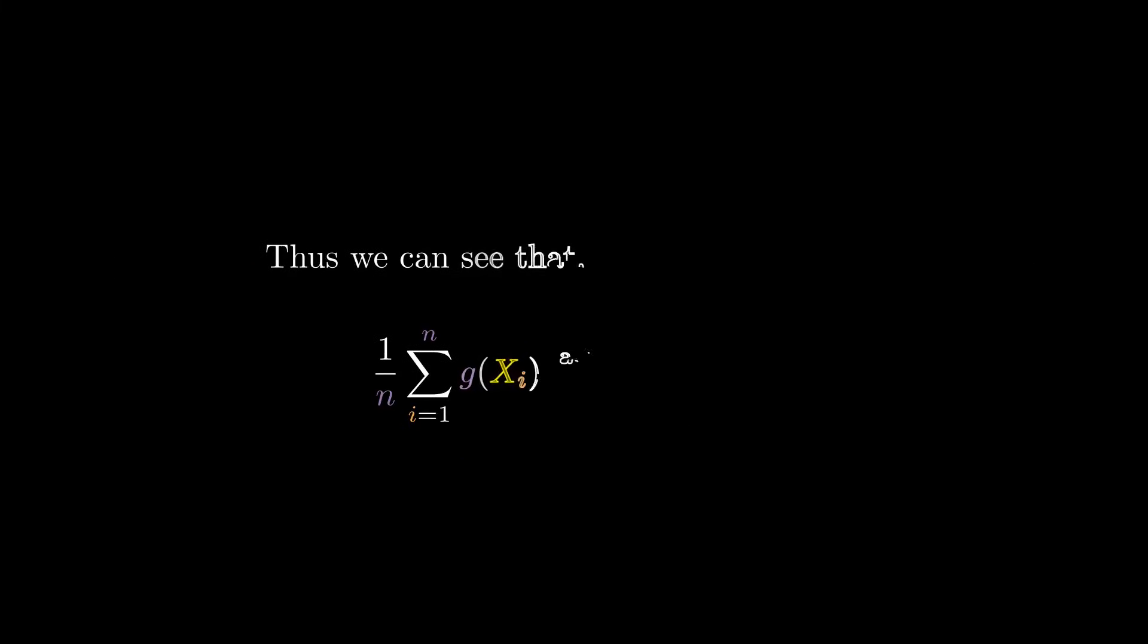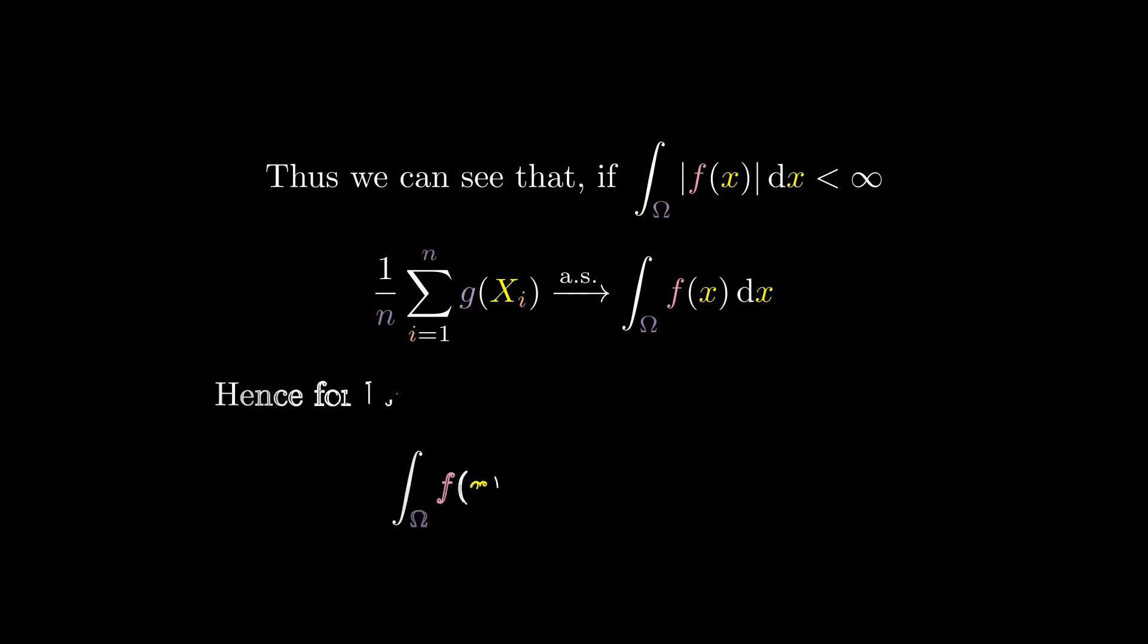If the integral converges absolutely, and we take N observations of G of X, each one independent and identically distributed, the law of large numbers tells us that the sample mean converges almost surely to the true expected value, and therefore to the integral of F.